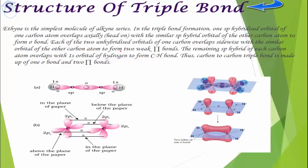Next let's discuss the structure of the triple bond. In a triple bond, the hybridization is sp. There are two pi bonds, so two pure p orbitals will be present. Between the two carbon atoms there is a sigma bond — one sp hybridized orbital forms a sigma bond between the two carbon atoms, and the other forms a sigma bond with a hydrogen atom.